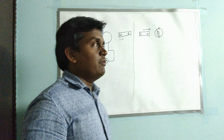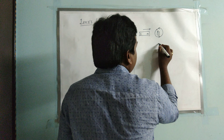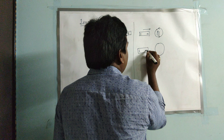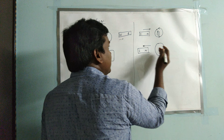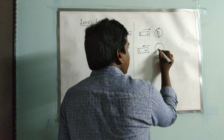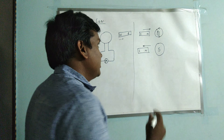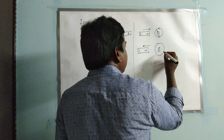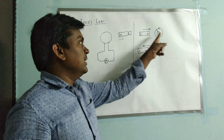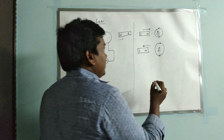Consider a second situation: a coil and a bar magnet with south and north poles, where the bar magnet is moving away from the coil. When the bar magnet moves away, an opposite pole is exhibited in the coil, so there is attraction between the coil and magnet. The direction of induced current in this case is clockwise.